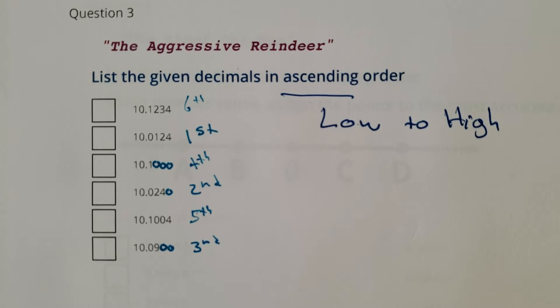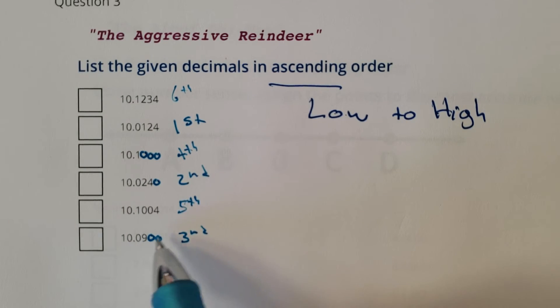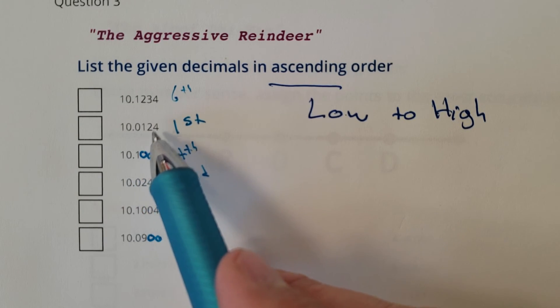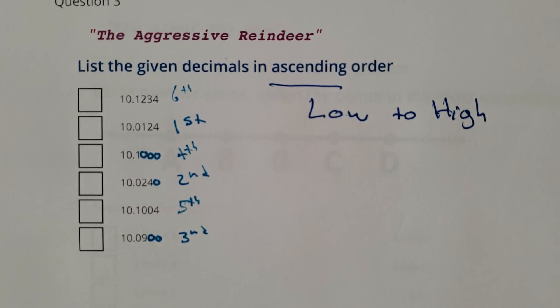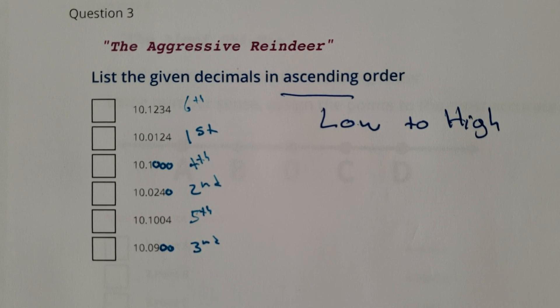That is the Aggressive Reindeer. The best way to do that, like I said, add on extra numbers so they all line up. Just because you have more decimals doesn't necessarily mean you are the smallest number. That's that one.